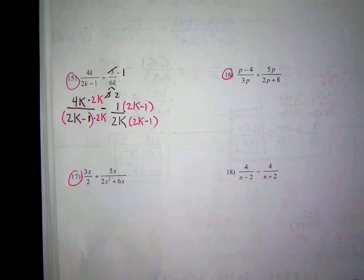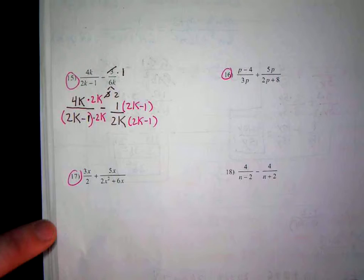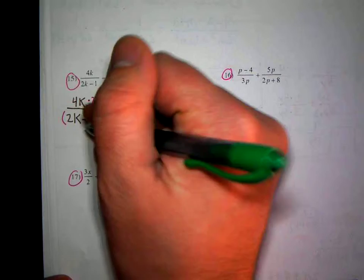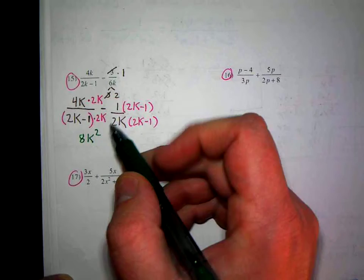So 4k times 2k is? Close. 4 times 2 is 8. K times k is k squared. So it's 8k². And I'm going to go ahead and just leave this as minus 1, 2k-1.